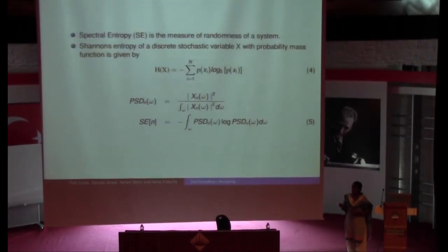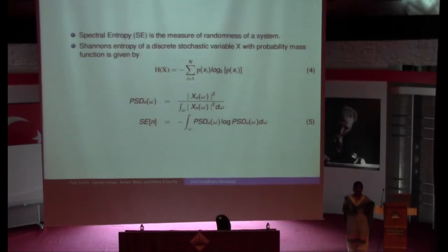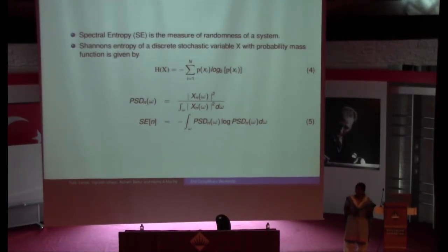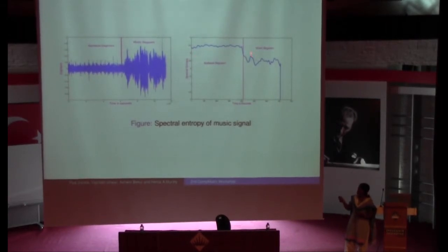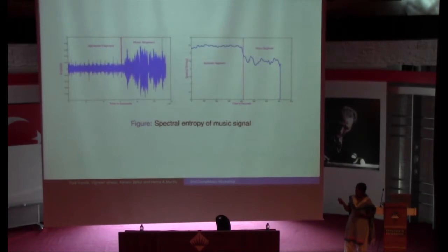Moving to spectral entropy: it identifies the randomness of the signal, or how disordered the signal is with respect to time. For the same example, I can simply put a hard threshold on the spectral entropy in order to discriminate between applause and music segments.